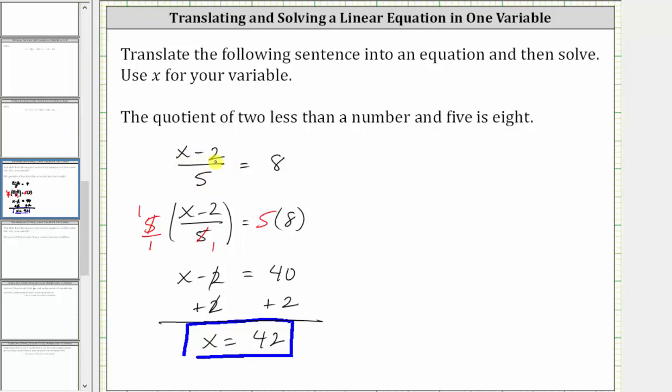Performing the substitution, we would have the quantity 42 minus two divided by five equals eight.